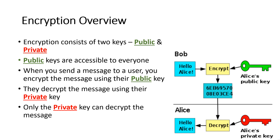Here's a simple example: Bob wants to send Alice a message. He types 'Hello Alice.' It gets encrypted using Alice's public key. When she receives it, it gets decrypted by her private key.